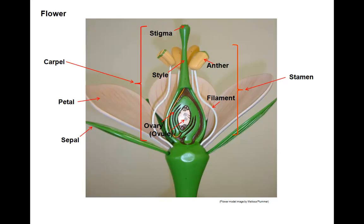Here's a model of a flower. Sepals, collectively known as the calyx, are the first floral parts to develop and function in protecting the floral bud. Petals, collectively known as the corolla, function in attracting pollinators.